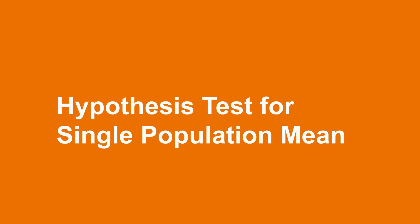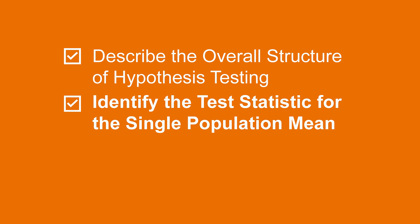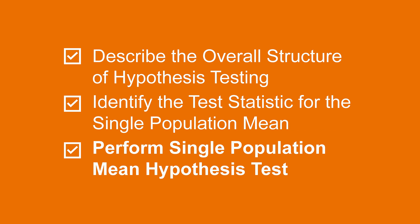Today's topic will see us apply the general hypothesis test method to a single population mean. We will begin with a quick overview on the general structure of a hypothesis test, then discuss the specific form of the test statistic for the single population mean, which will involve a discussion of the student's t-distribution. Finally, we will walk through an entire hypothesis test so you can see every stage of the method in the context of solving a single population mean problem. Let's set that problem up now.